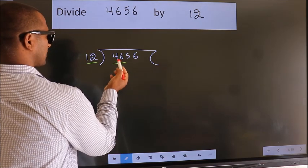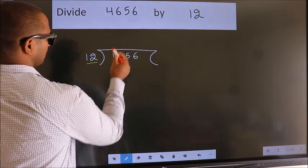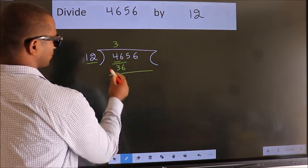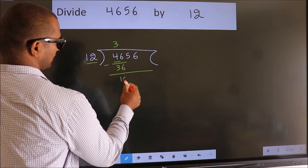A number close to 46 in the 12 table is 12 threes, 36. Now we should subtract. We get 10.